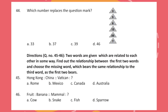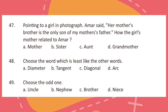Direction for questions 45 and 46: Two words are given which are related to each other in some way. Find out the relationship between the first two words and choose the missing word which bears the same relationship to the third word as the first two bear. Question 47: Pointing to a girl in a photograph, Amar said her mother's brother is the only son of my mother's father. How is the girl's mother related to Amar?